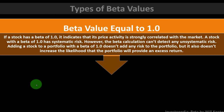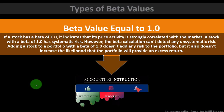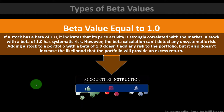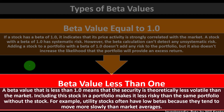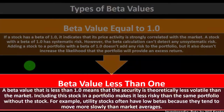Types of beta values: Beta equal to one — if a stock has a beta of one, it indicates that its price activity is strongly correlated with the market, meaning it has systematic risk. The beta calculation can't detect any unsystematic risk. Adding a stock with a beta of one doesn't add extra risk to the portfolio but also doesn't increase the likelihood of an excess return. Beta less than one means the security is theoretically less volatile than the market — for example, utility stocks often have low betas.